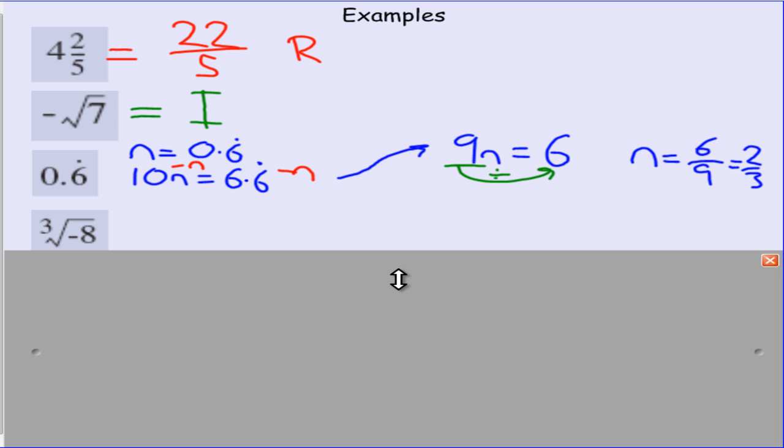The cube root of negative 8. Now, remember the cube root is a little different to a square root. It is saying what number can you multiply by itself three times so that it gives you the number under the sign. So if we have a look at negative 8, if we want to multiply a number three times together, it has to be a negative number to give us a negative answer.